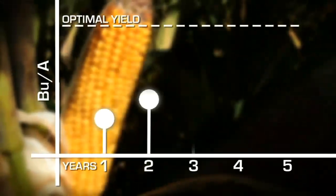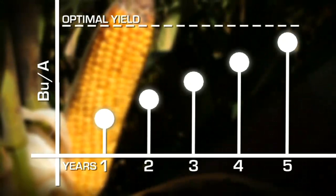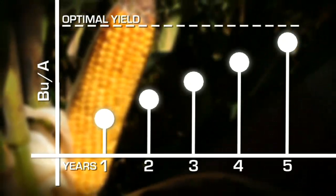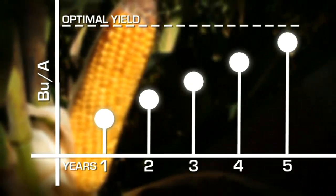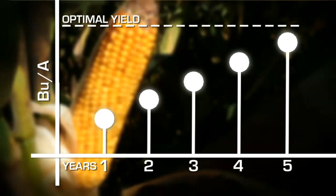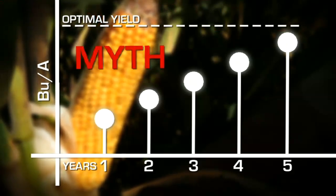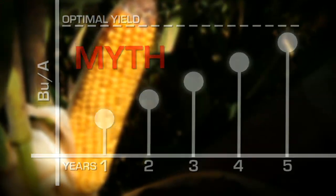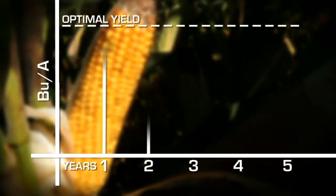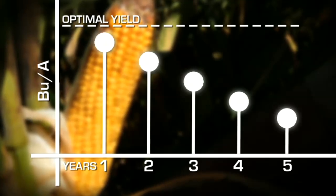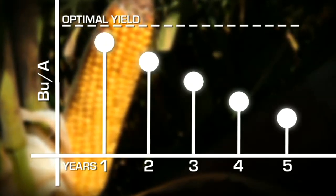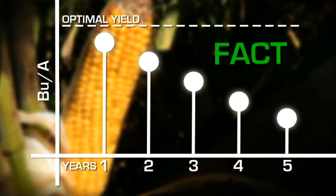I knew that continuous corn took a yield penalty, and the conventional wisdom — what I'll actually call a rural legend — was that the yield penalty was worse in the first year, and that each year you were in continuous corn the penalty got less, so that after five years of continuous corn there was no yield penalty. Actually, the data shows it's exactly the opposite. The penalty actually gets worse each year you're in continuous corn, and the reason is that the penalty is due to the residue of the previous corn crop.